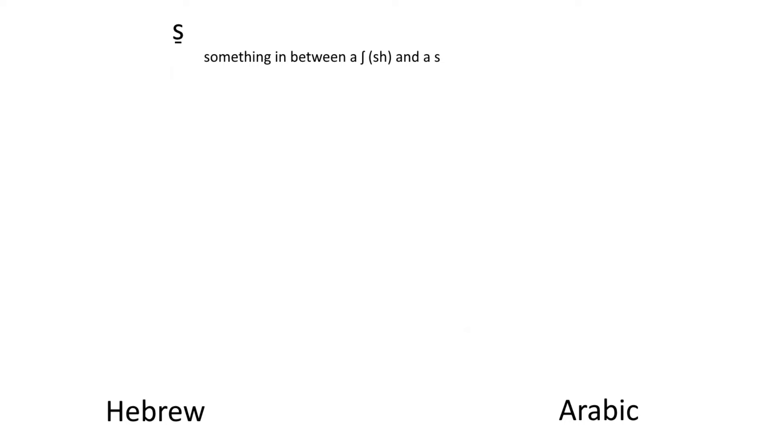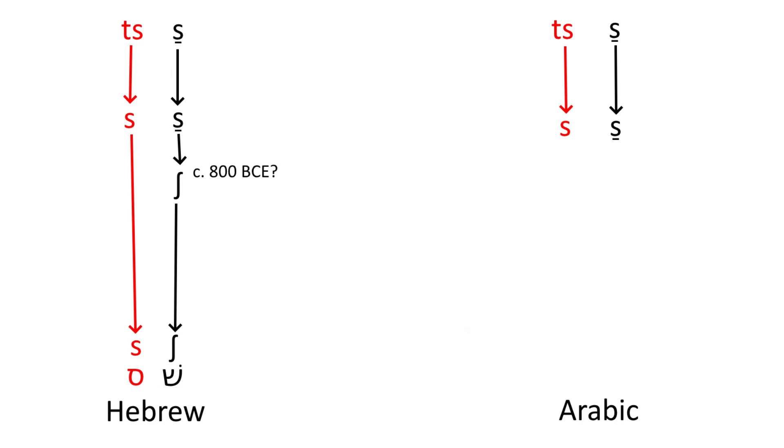In Hebrew, once the Ts de-affricated to S, the original retracted S retracted further to a Sh in order to better differentiate the two. In Arabic, once the Ts de-affricated into an S, the new S and the original retracted S simply merged,